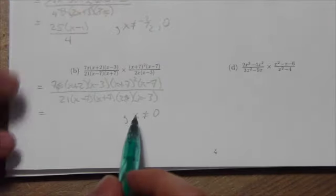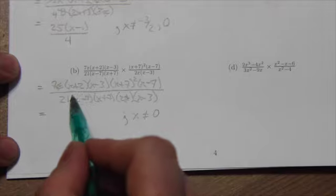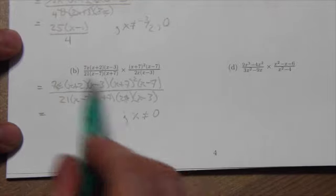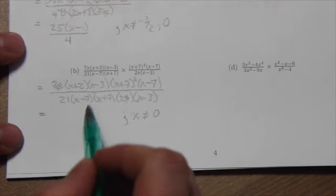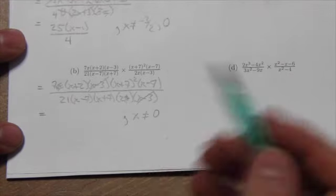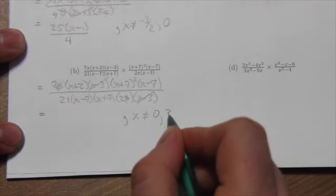The (x+2) doesn't have a partner in the denominator so it stays. (x-3) though does, and that will go away so long as we state that x is not allowed to equal 3.